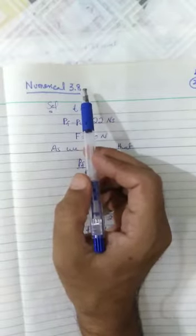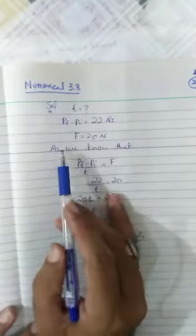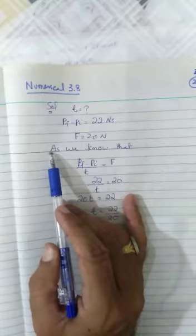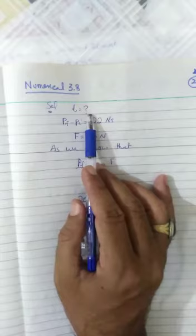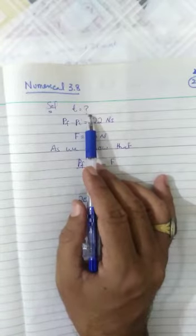Now in this numerical number 3.8, I am going to read out the statement. How much time is required? Time equals question mark. How much time is required to change 22 Newton second momentum?